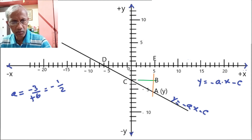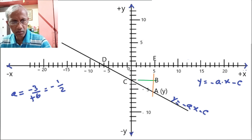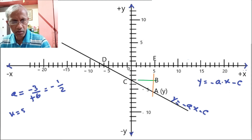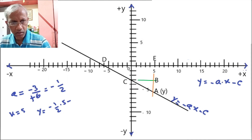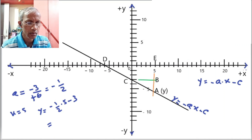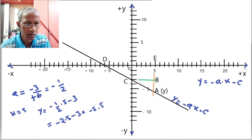So we will put this value of a into the equation for the line y. Let's take one example — we take the value of x to be plus 5. At point E, y is equal to minus half times x, which is 5, minus the constant, which is minus 3. That gives us minus 2.5 minus 3, which equals minus 5.5.